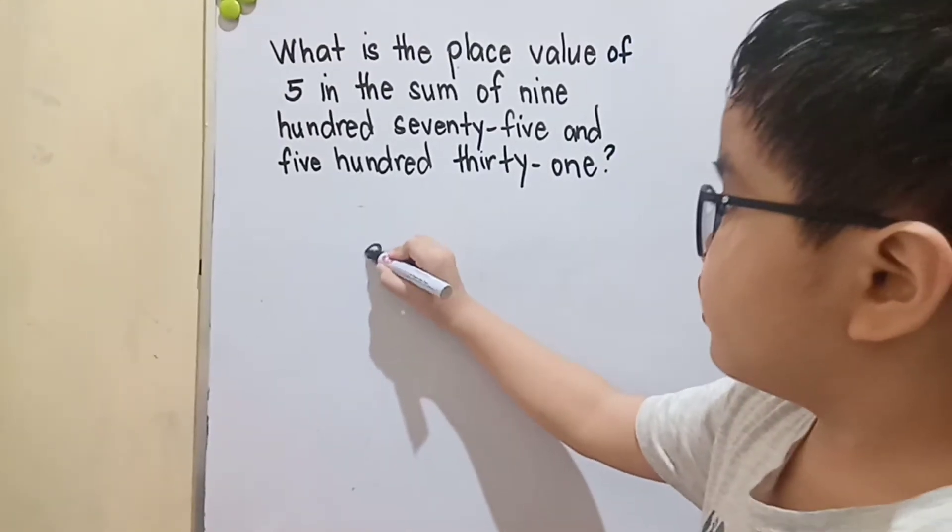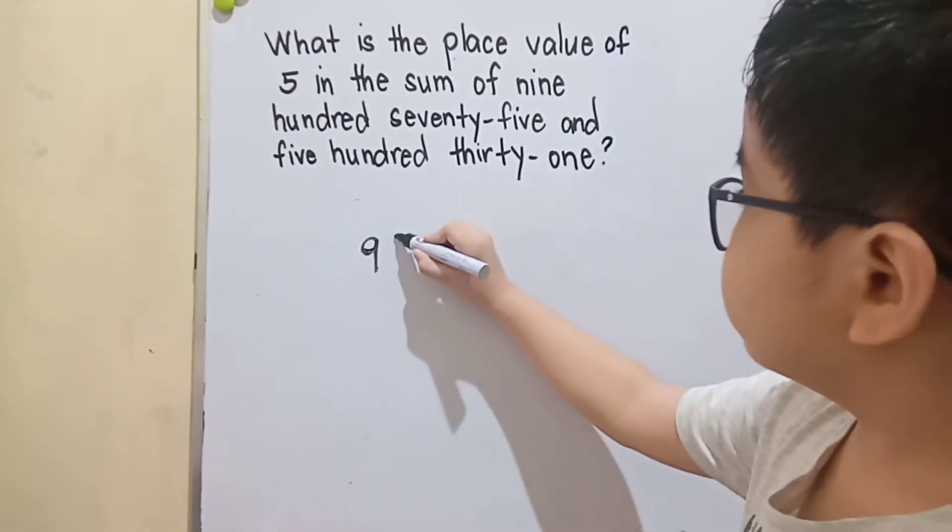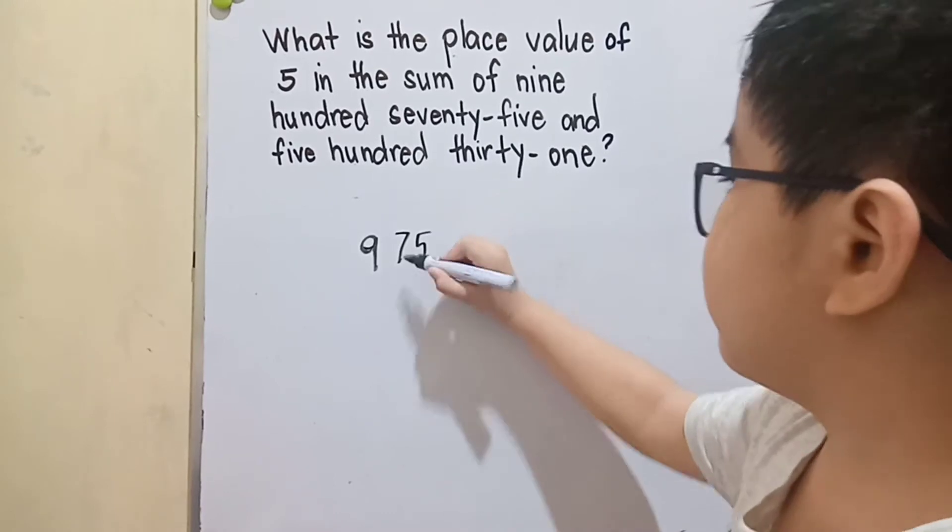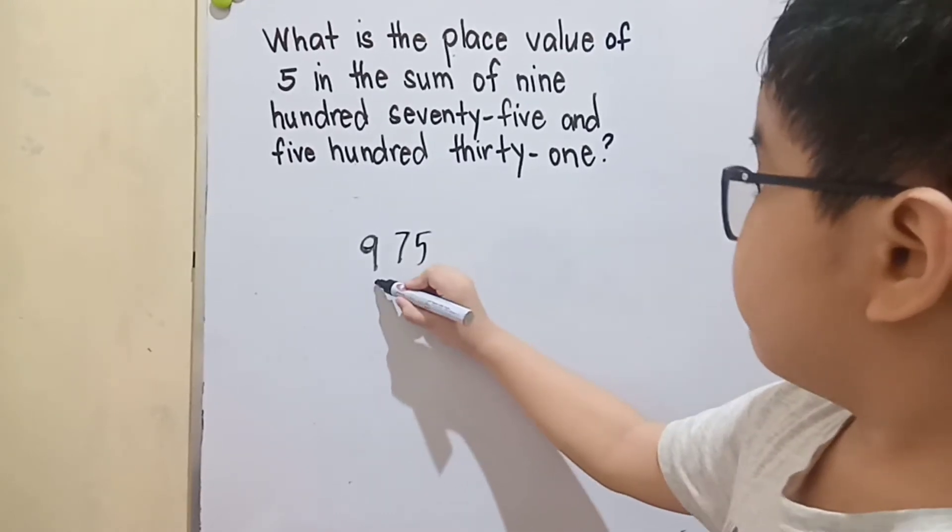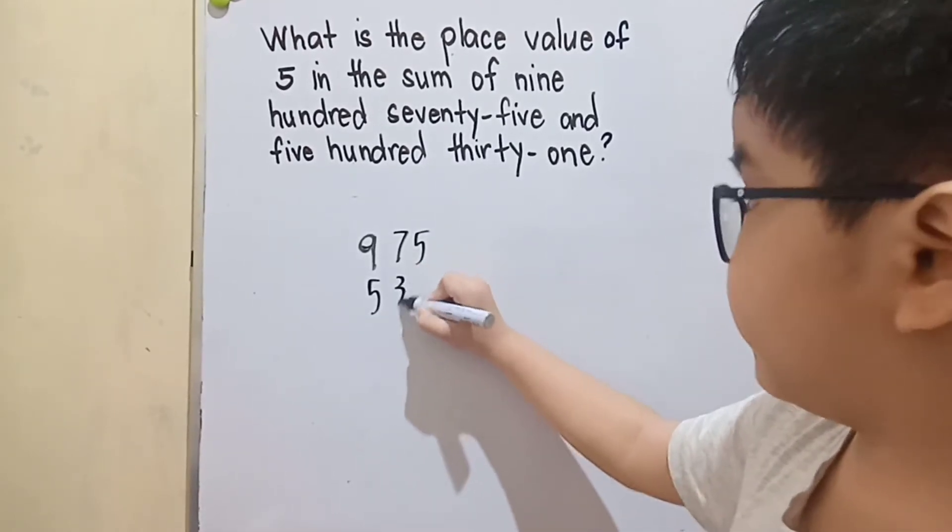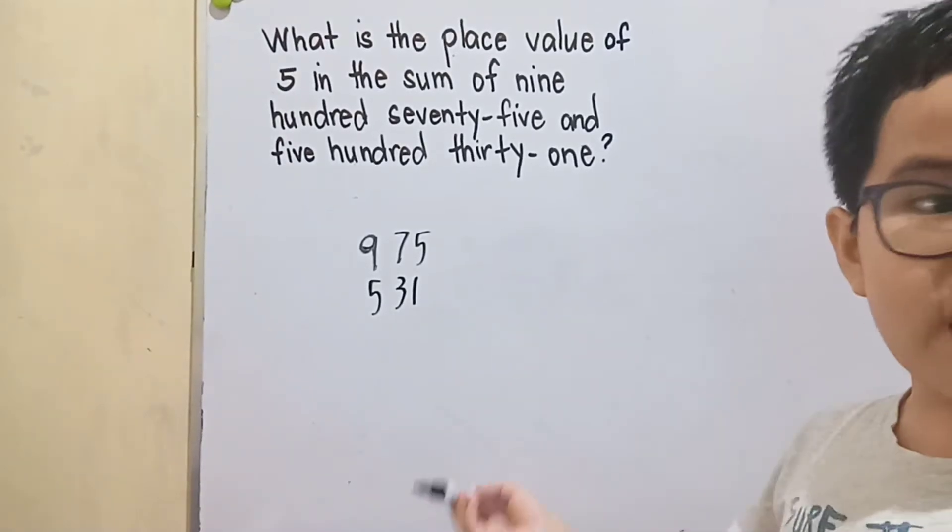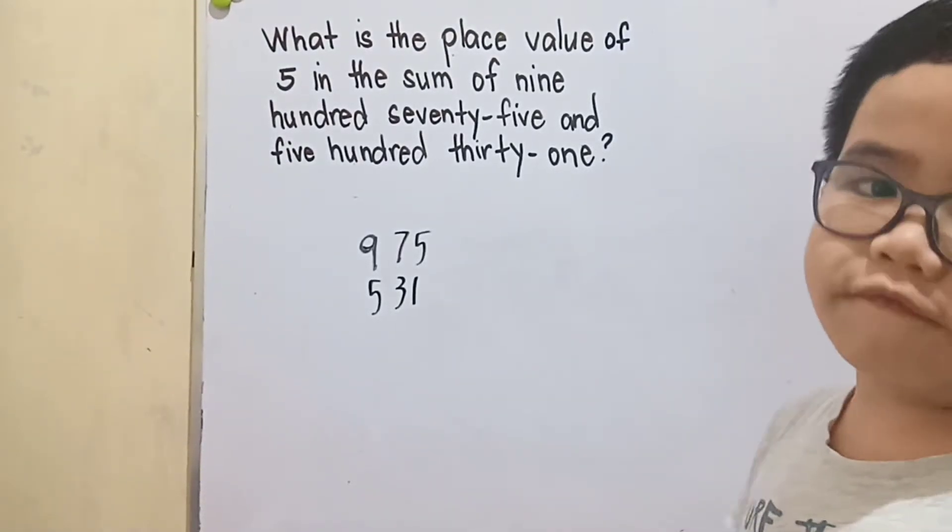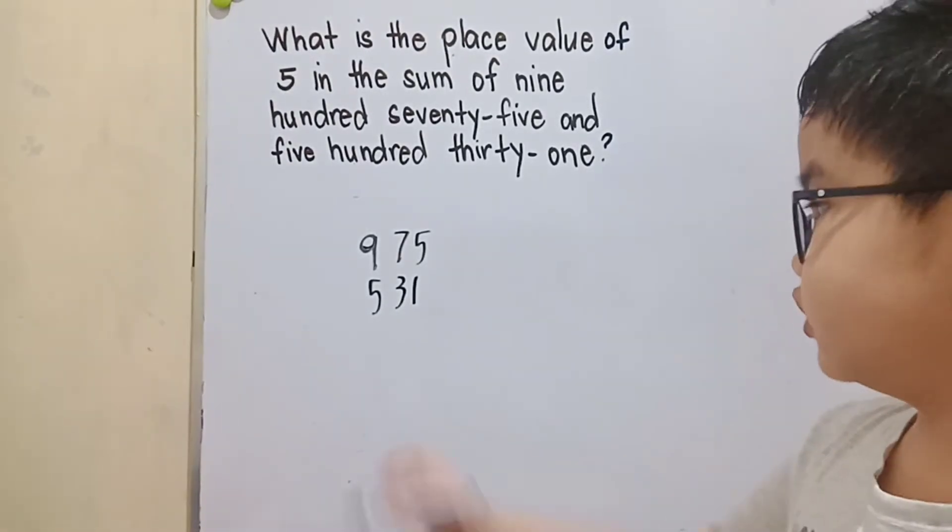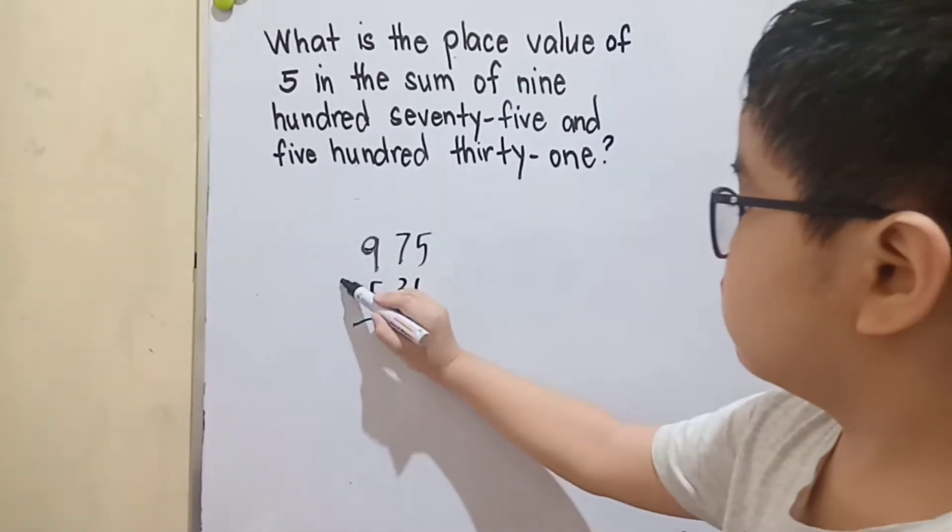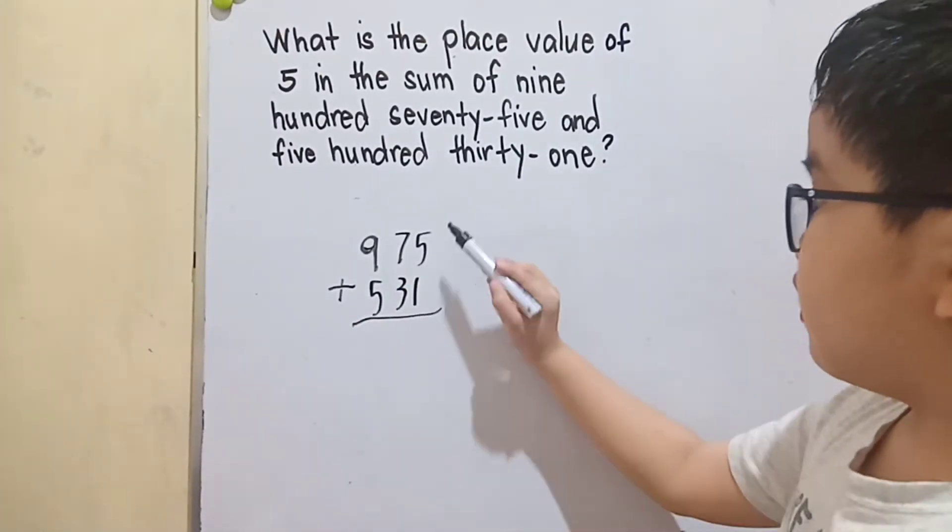So we have 975 and 531. Now we will get the sum of these two numbers.